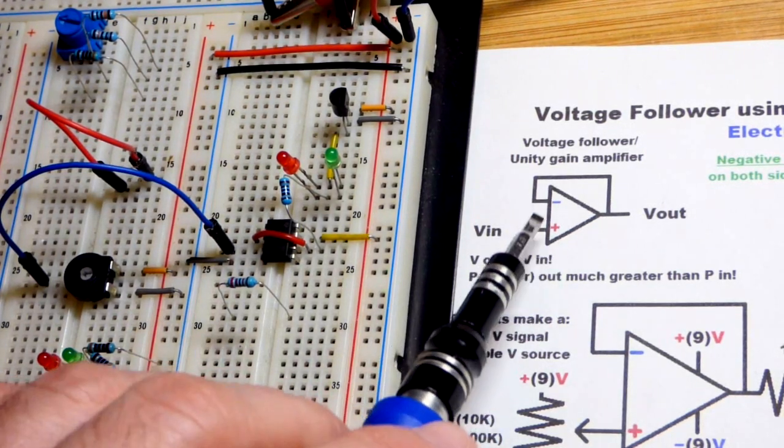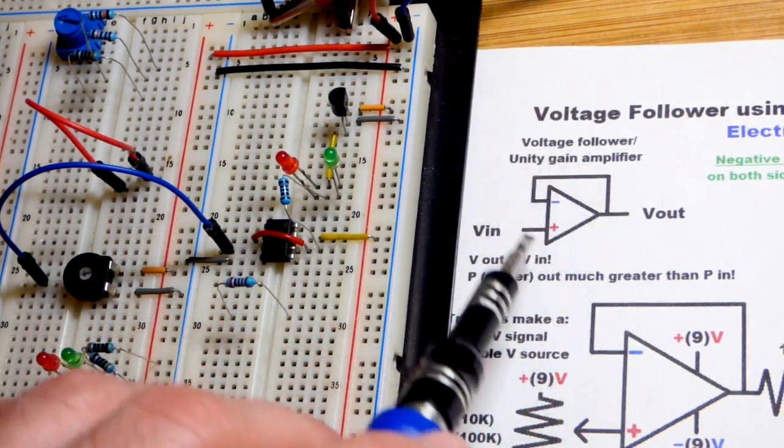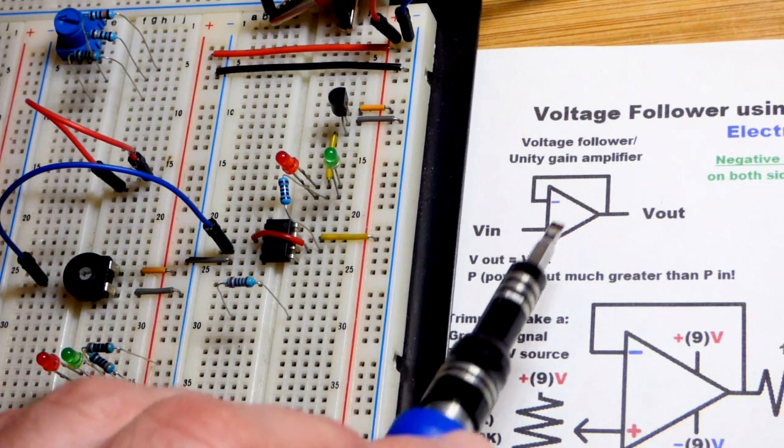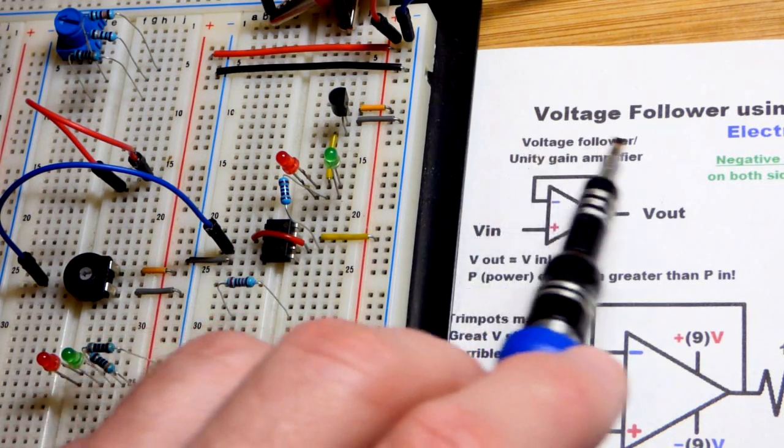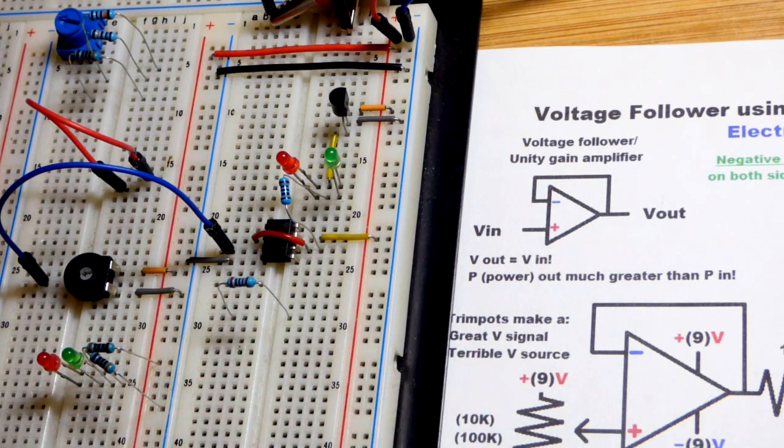So now in this video, we're going to look at using an op amp. This is a basic schematic symbol for an op amp. We're going to use a 741 op amp as a voltage follower or unity gain amplifier.